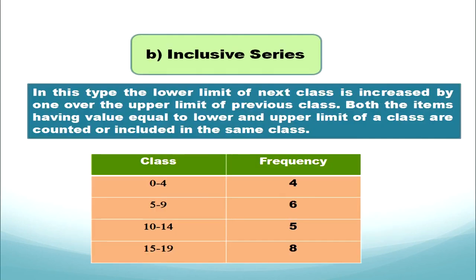To summarize exclusive series: the class interval gap remains the same; the upper limit of the previous class is the next lower limit; and the value of the upper limit is not included in that class — it is included in the next class.